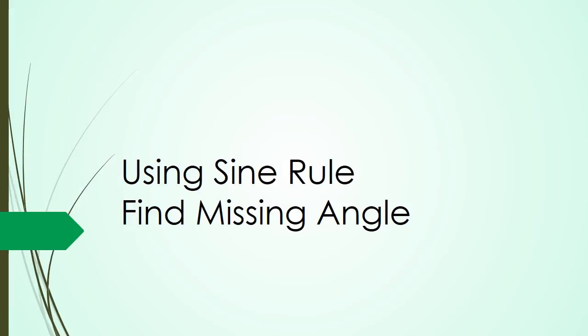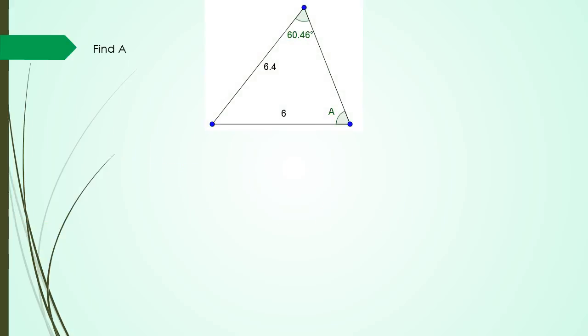Hey folks, in this session we're going to be looking at using sine rule to find the missing angle. This is for non-right angle triangles. Let's get started.